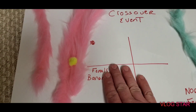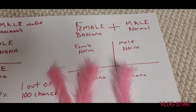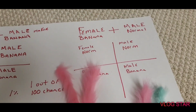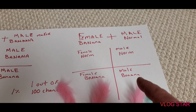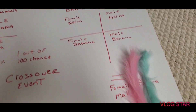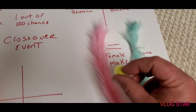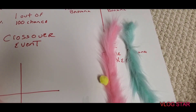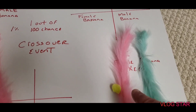Now it doesn't stop there. Take that female banana and pair her with a male normal. What you produce is: female normal, female banana, male normal, and male banana. That male banana's DNA strand has the male side determining sex, but now the banana gene is riding on the female strand — the X chromosome. What you now have is a male that produces female bananas.